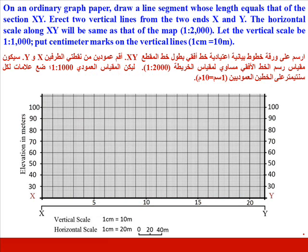On an ordinary graph paper, draw a line segment whose length equals that of section X-Y. Erect two vertical lines from the two ends X and Y. The horizontal scale along X-Y will be the same as that of the map. Let the vertical scale be 1 to 1000; put centimeter marks on the vertical lines where 1 centimeter equals 10 meters.